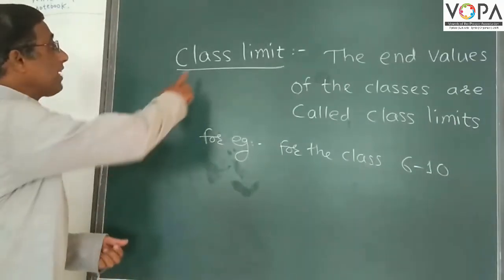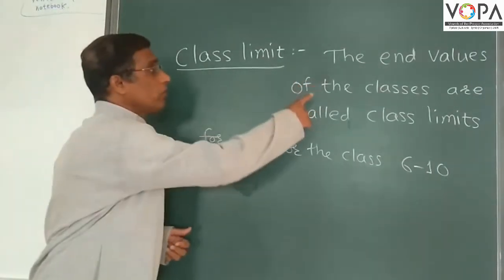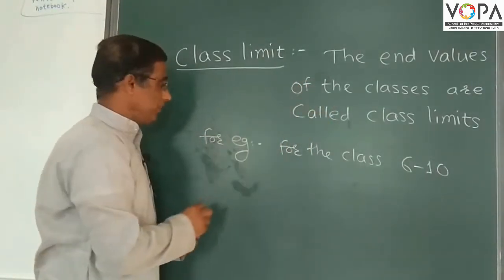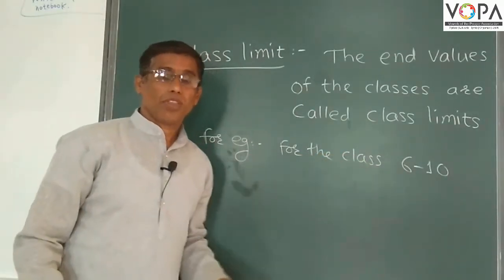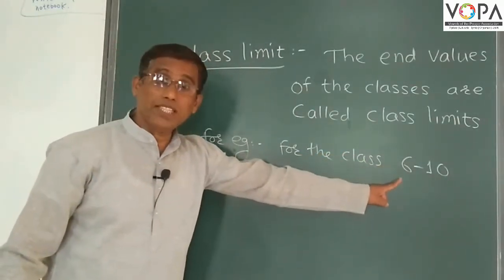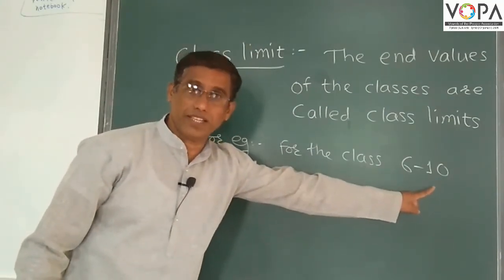Now we take class limit. The end values of the classes are called class limit. For example, for the class 6 to 10, here lower class limit is 6 and upper class limit is 10.